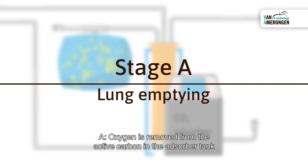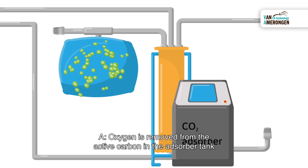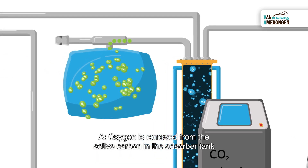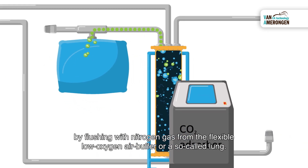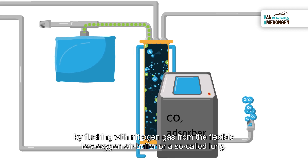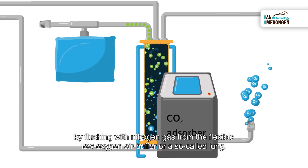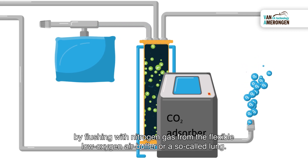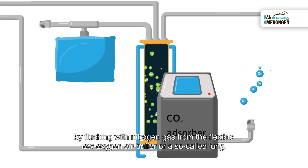A. Oxygen is removed from the active carbon in the adsorber tank by flushing with nitrogen gas from the flexible low-oxygen air buffer, or a so-called lung.